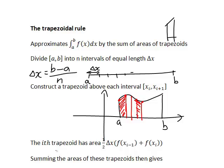The i-th trapezoid has area equal to one-half times the length delta x times the height, which is represented by f(x_{i-1}) plus f(x_i). Here f(x_{i-1}) is the function value at the left endpoint of the interval and f(x_i) is the function value at the right endpoint, and together they give us the area of that trapezoid.